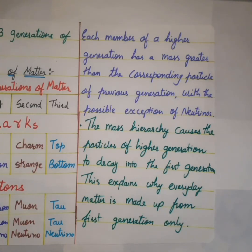Each member of a higher generation has a mass greater than the corresponding particle of previous generation with the possible exception of neutrinos. The neutrinos' small but non-zero masses have not been accurately determined. The mass hierarchy causes the particles of higher generation to decay into the first generation. This explains why everyday matter is made up from only first generations.